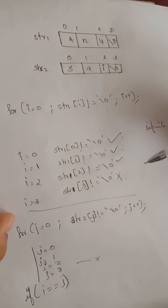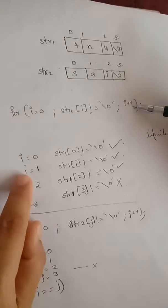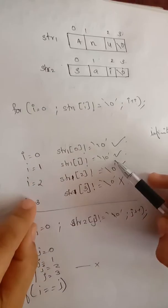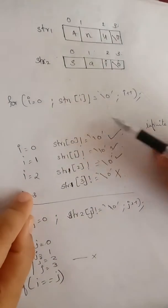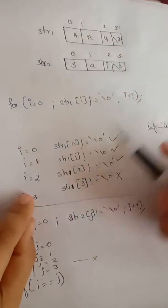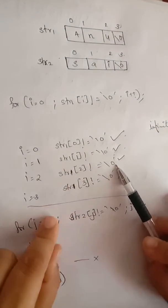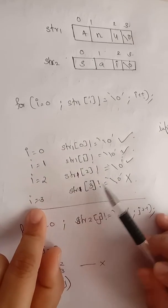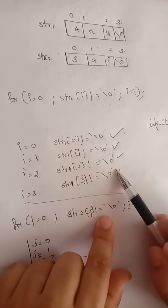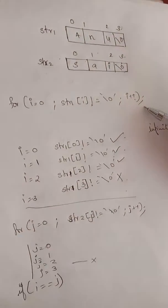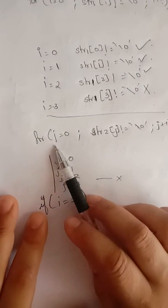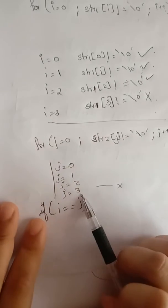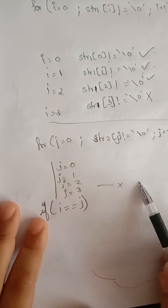Since there is no body to execute, it will automatically increment i. i becomes 1. Again it checks whether str1[1] is not equal to null — that is true. Again there is no body, so i increments to 2. That condition is also true, then i becomes 3. At str1[3], it is equal to null, so the condition is false and the loop stops. Similarly for the j loop: at j equal to 3 the condition becomes false, so both loops have finished executing.